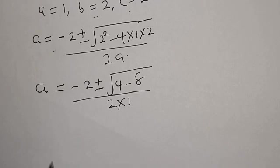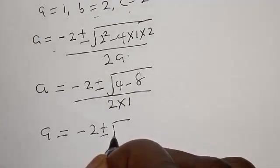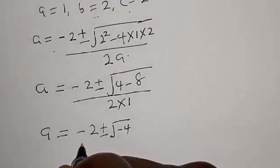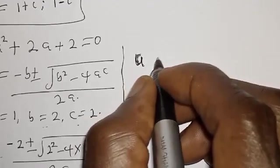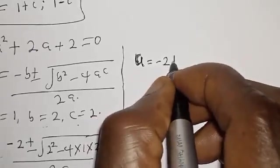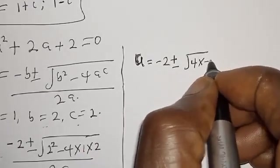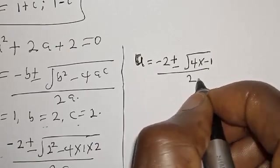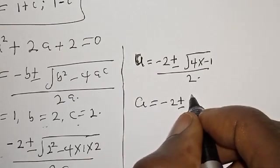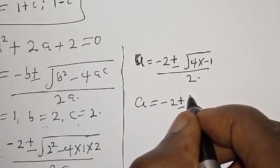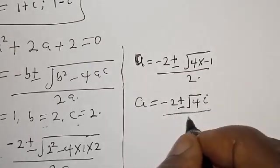Then we have a equal to minus 2 plus or minus square root of minus 4, over 2, which equals minus 2 plus or minus square root of 4 multiplied by minus 1, over 2. Then a will be equal to minus 2 plus or minus square root of 4i, over 2.